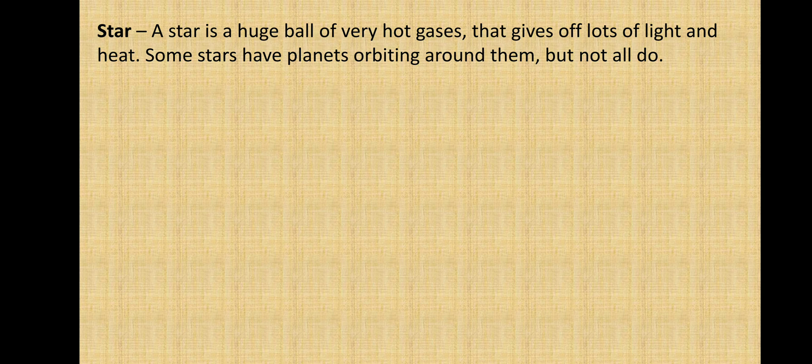Next, a star. A star is a huge ball of very hot gases. It gives off a lot of light and heat. Some stars have planets orbiting around them, but not all do. Every night we are able to see something shining in the sky — those are stars. They seem so small but actually they are huge with many hot gases.